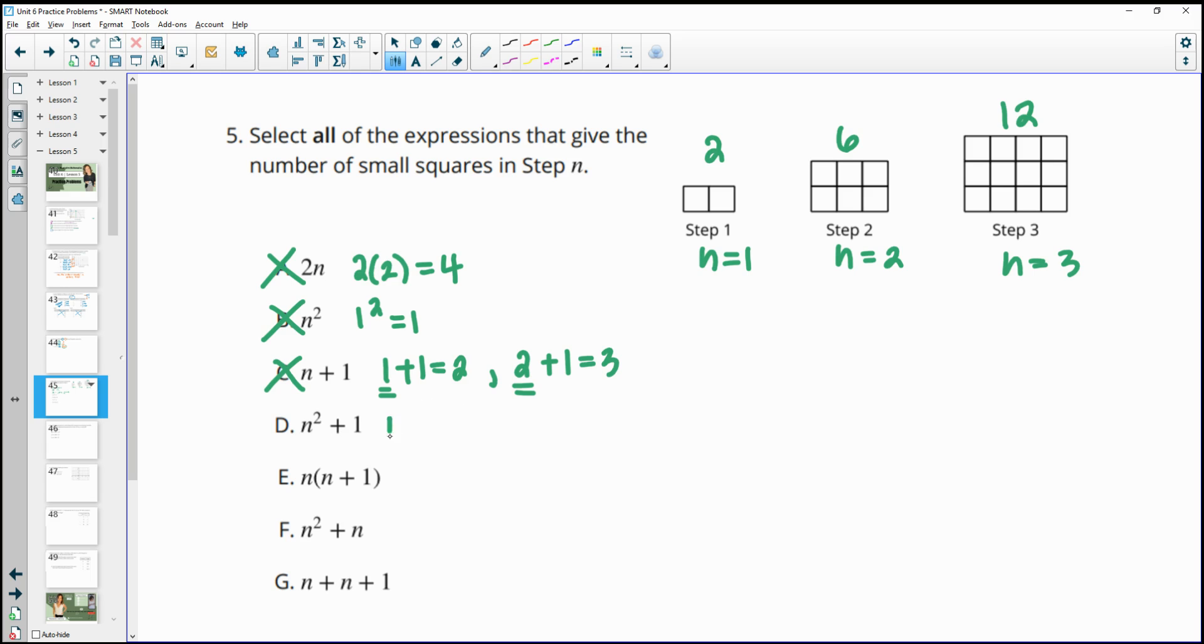n squared plus 1. So if we did 1 squared plus 1, that's 2, so step 1 is good. 2 squared plus 2 would be 4 plus 2, which is 6. So that's good for step 2. Wait, sorry. I did that wrong. It's only plus 1 here. So that would be 5 there instead, which is bad. So n squared plus 1, 2 squared plus 1 is 5, so that fails in step 2.